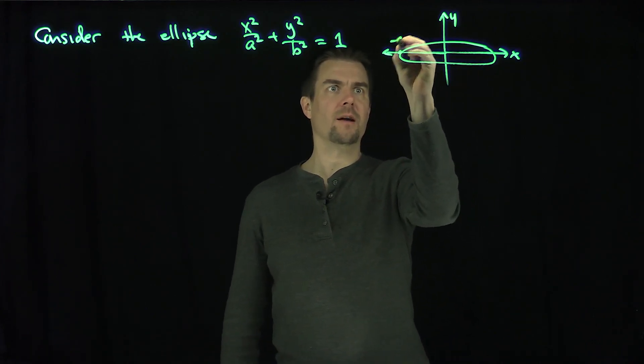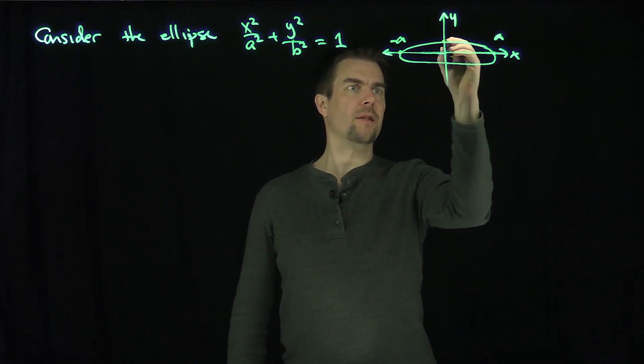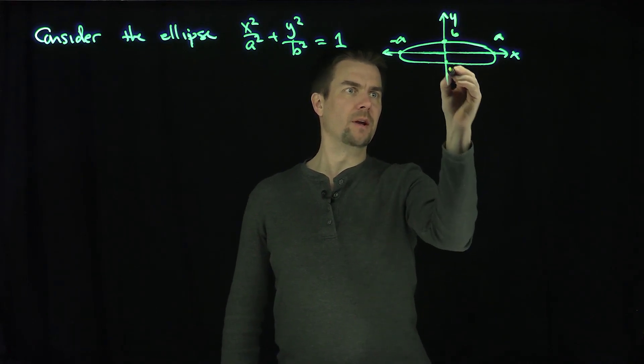Looks something like this, where that's negative a, that's positive a over there, and that's b, and negative b. So there's our ellipse.